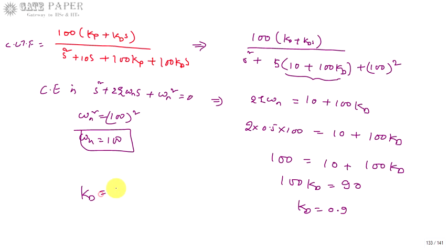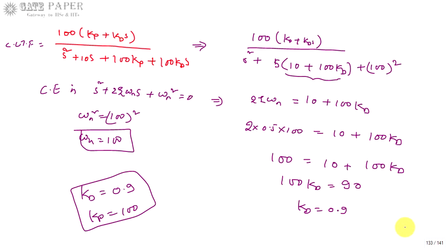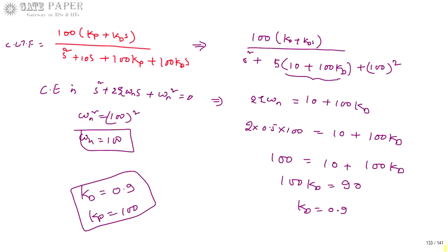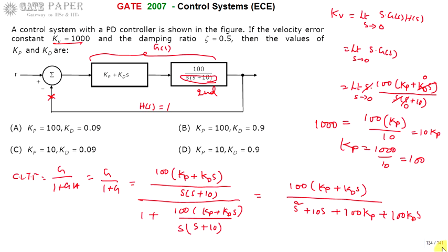So the required values are Kd equal to 0.9 and Kp equal to 100. The correct answer for this question is option B.